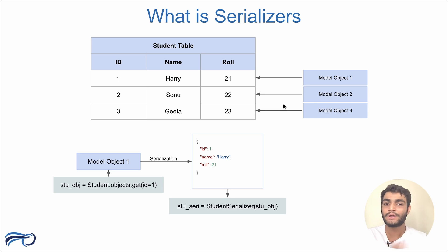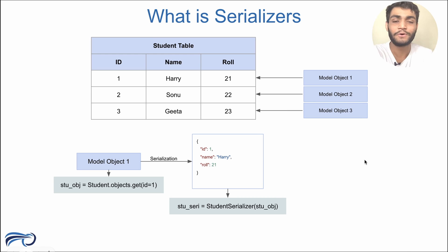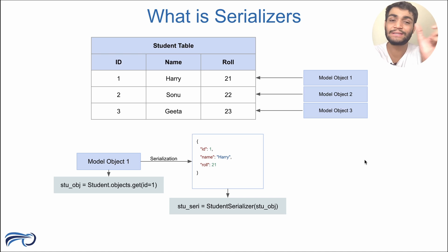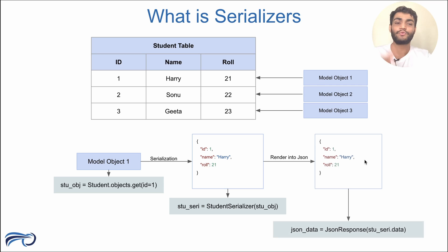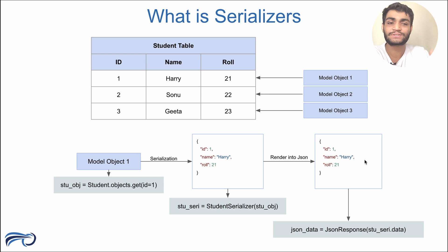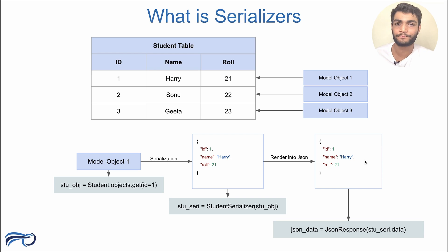So we made a StudentSerializer and passed the model object into it. Now we need to render this into JSON format so that the frontend or other applications can understand it. We use a function called JsonResponse, which converts the data additionally into JSON format and passes it to the frontend or other consumers. Now you understand what a serializer is.